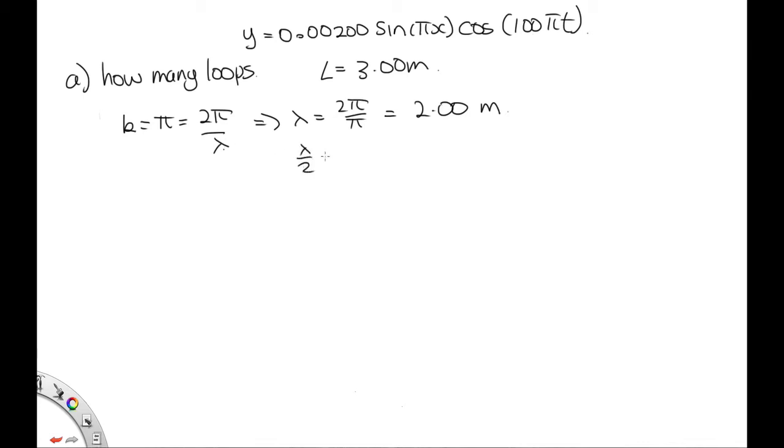So lambda over 2 is equal to 1.00 meters. So three of these fit into l. So that tells us that there's three loops, because there's three half wavelengths.